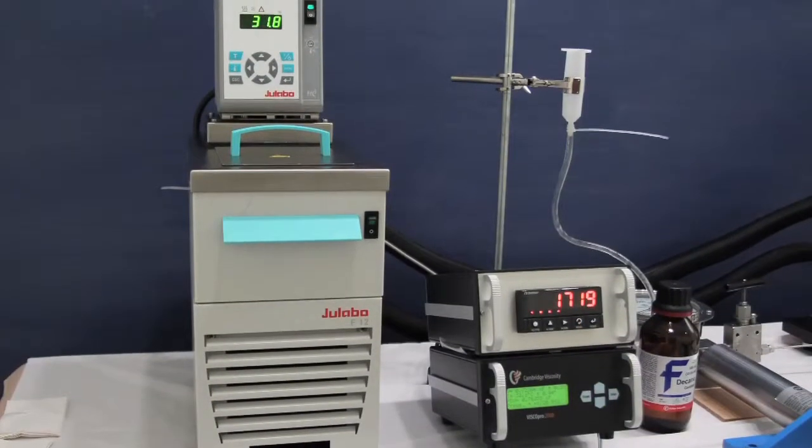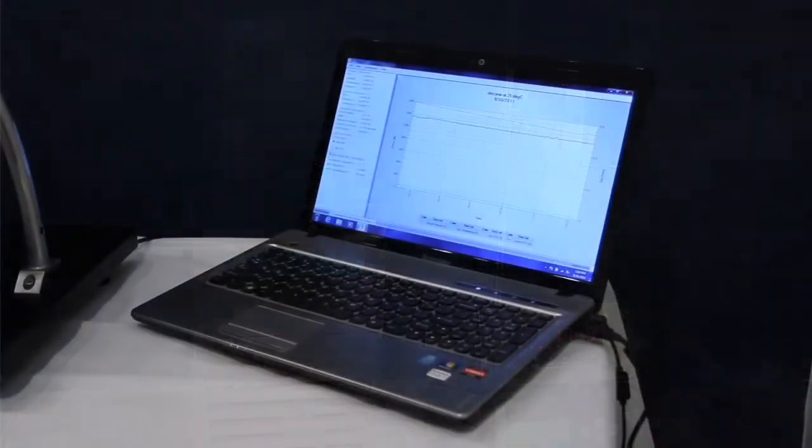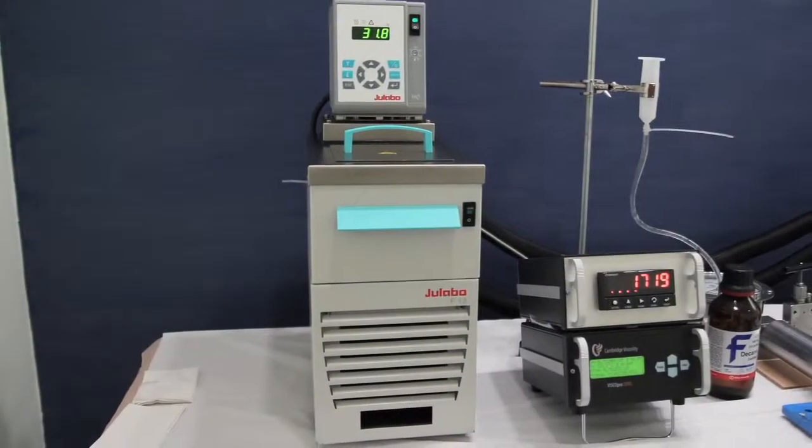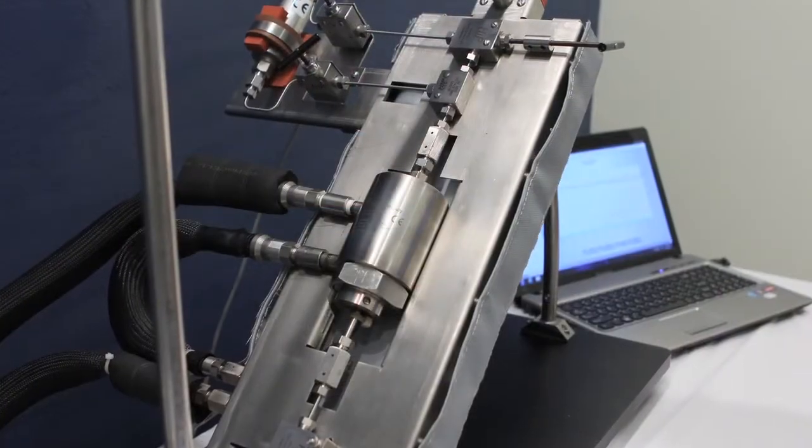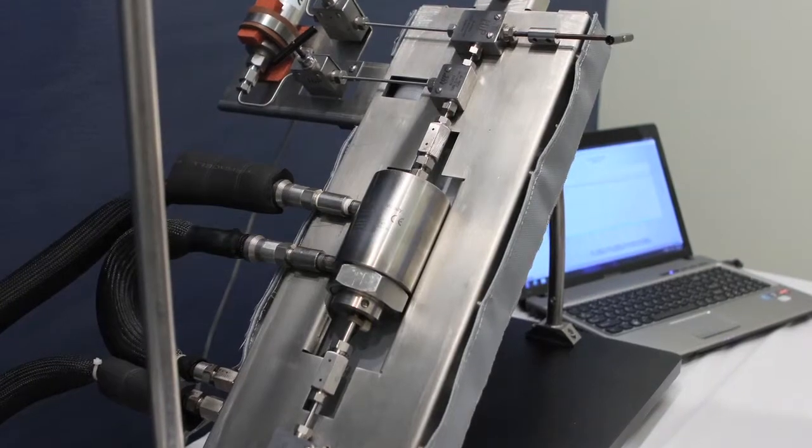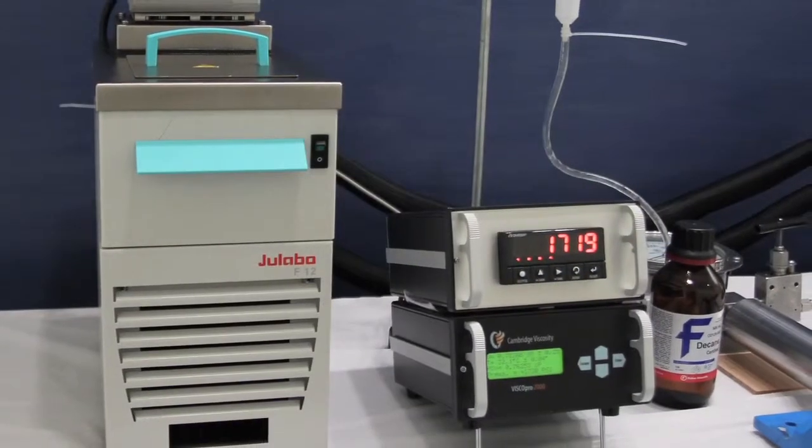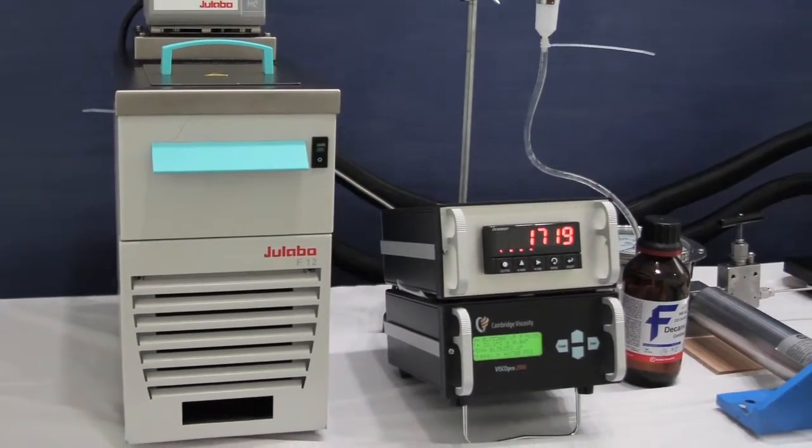Recirculating bath for temperature control. User interface data acquisition system. Standard ViscoLab PVT can reach up to 190 degrees Celsius with pressure reaching 20,000 PSI. There are additional options to reach 315 degrees Celsius and 40,000 PSI.